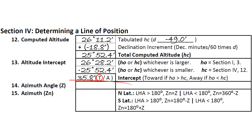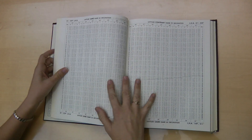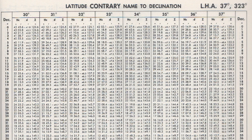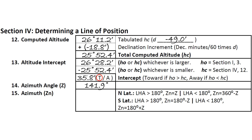First, we need our azimuth angle, abbreviated Z. We look up Z in Publication 229, in the same place we found our tabulated Hc. In our example, we turn to the page for the local hour angle at 323 degrees, with a latitude of 30 degrees. At the declination of 23 degrees, we see that we get a Z of 141.9 degrees. We note this on the site reduction form.